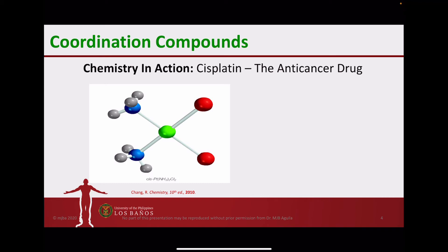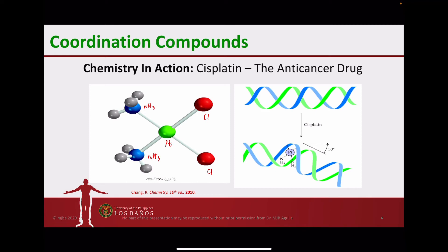Another example is cisplatin, popularly used as an anti-cancer drug. In cisplatin, the red spheres represent chlorides and the other groups represent ammonia, with platinum as the central metal. The two chlorides dissociate from the platinum and bind to the protein. Binding to the protein is made possible because the two chlorides are bonded in positions side by side — not opposite — to one another. This cis arrangement is very important for the coordination of cisplatin to the protein.